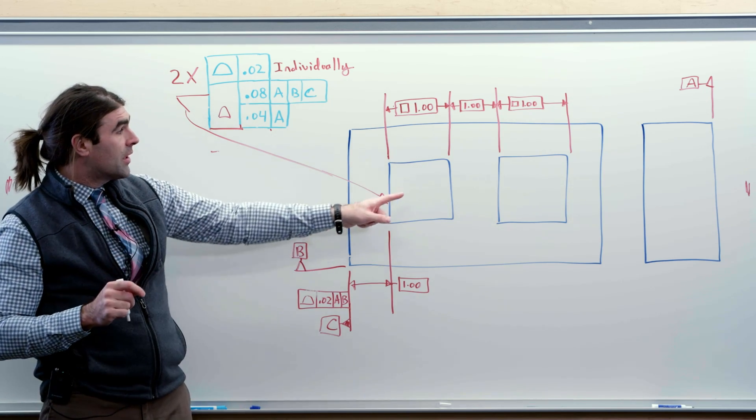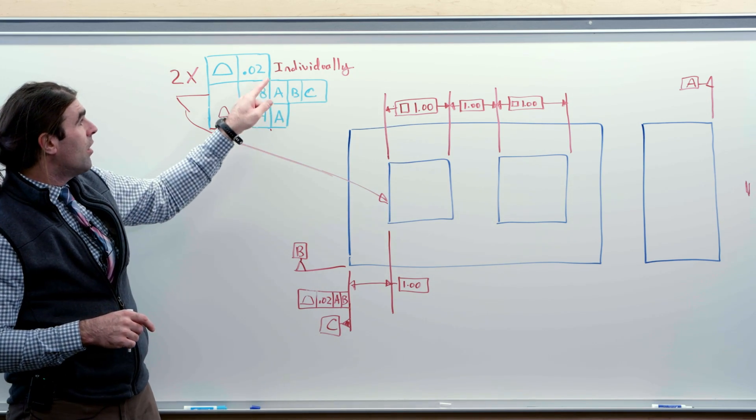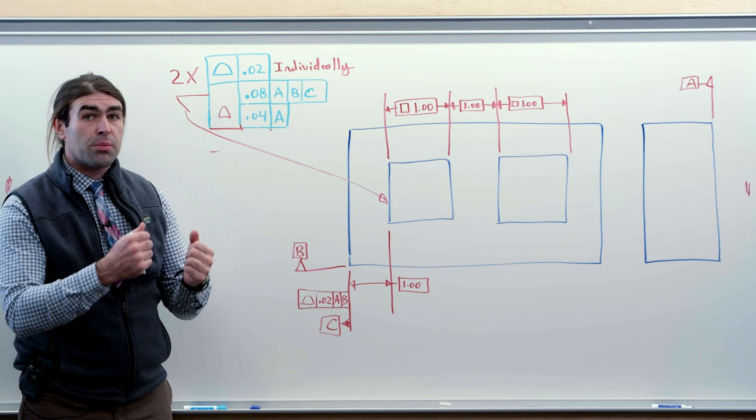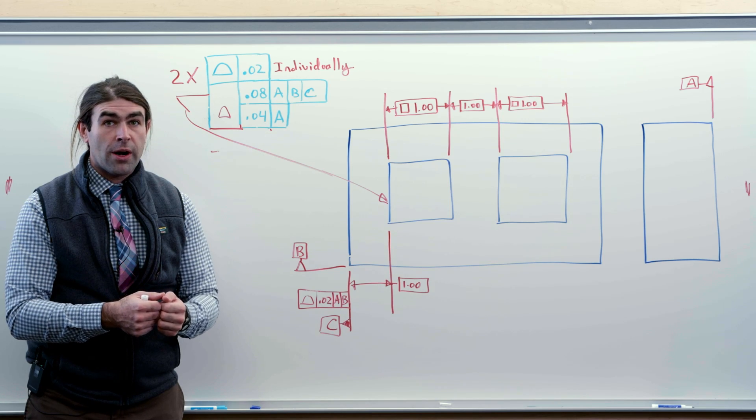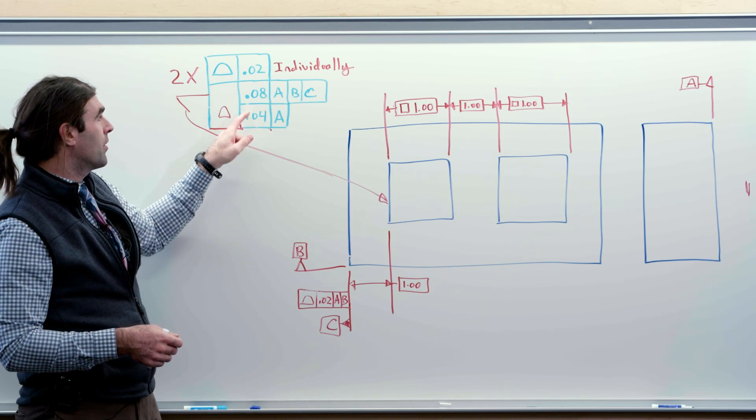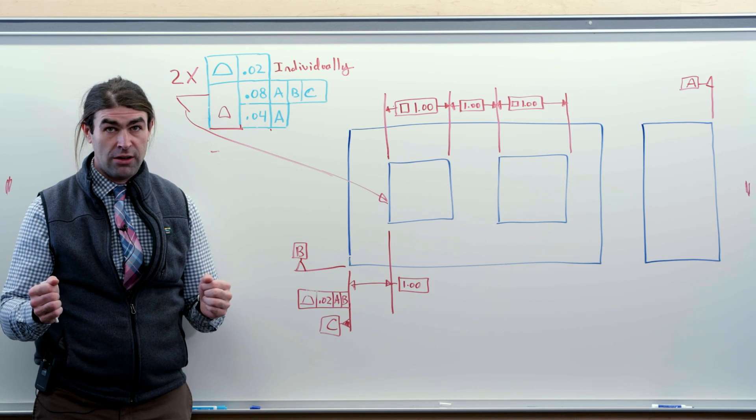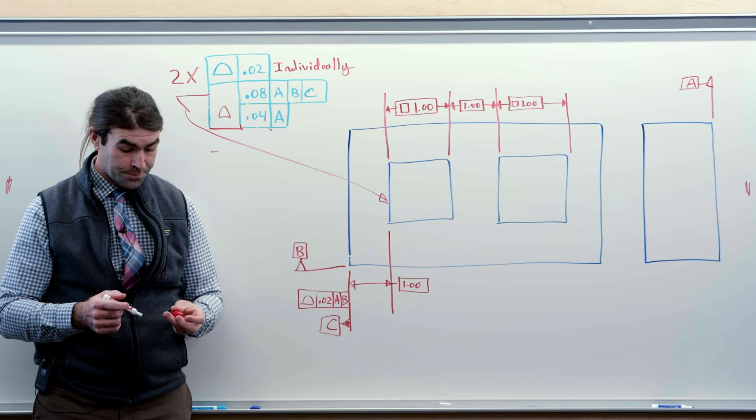So in this case, because they're one inch squares, our LMC is 1.02, the largest the square can be, and the MMC is 0.98, the smallest the square can be. Not one of these numbers, not the 80 or not the 40 thousandths, because those are controlling location and orientation.